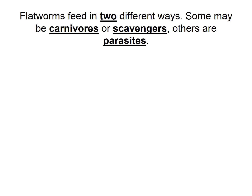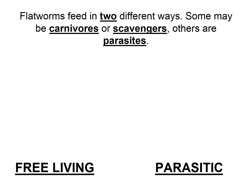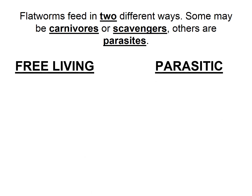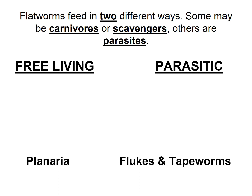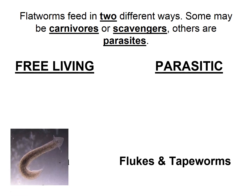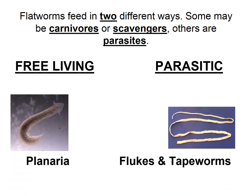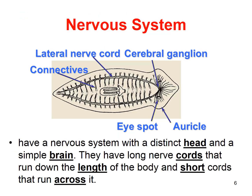Flatworms feed in a couple of different ways — some can be carnivores or scavengers, and others are parasites. There are two basic categories: free-living ones and parasitic ones. The free-living example is the planaria, and the parasitic examples would be the flukes and the tapeworms.